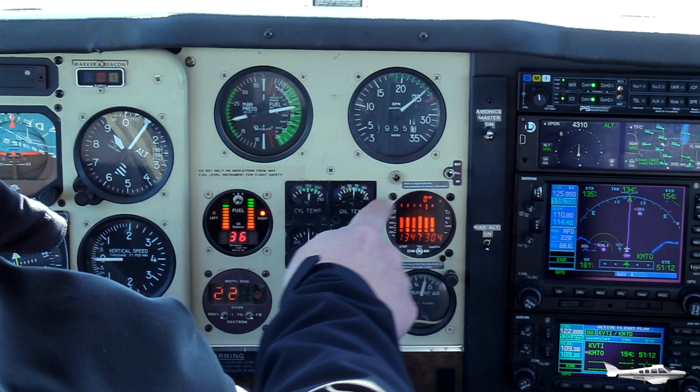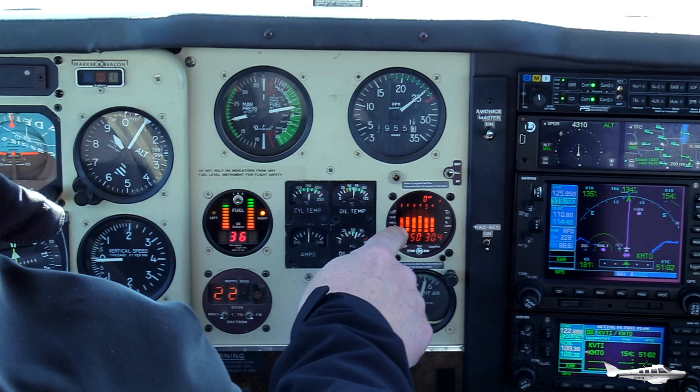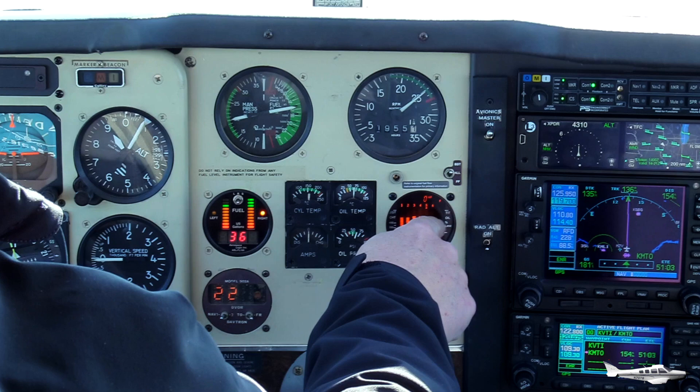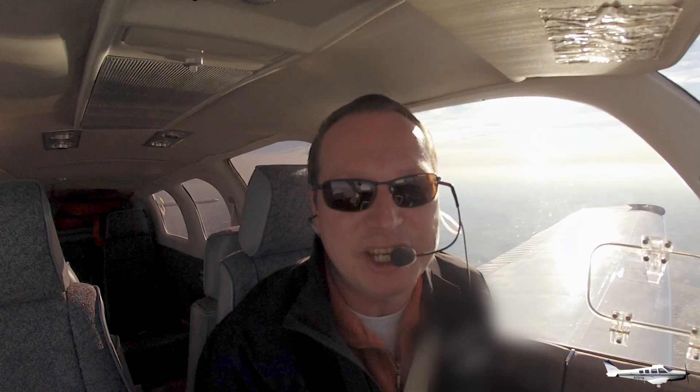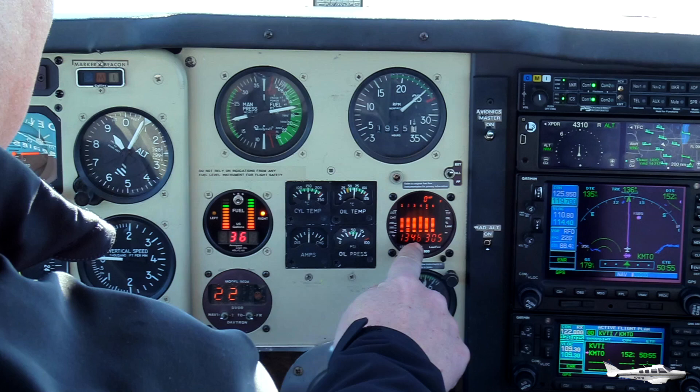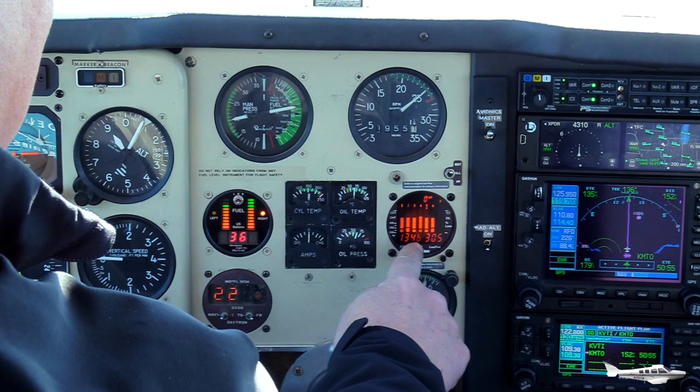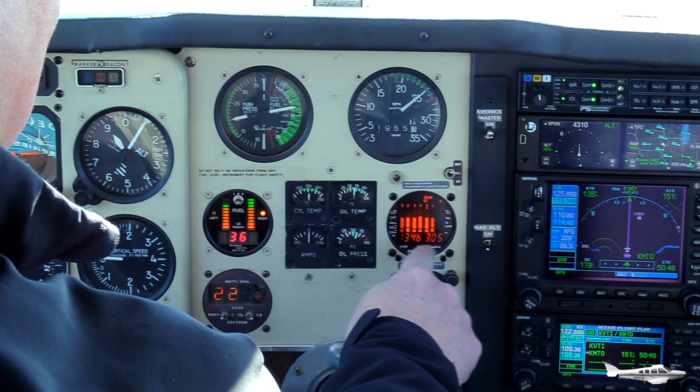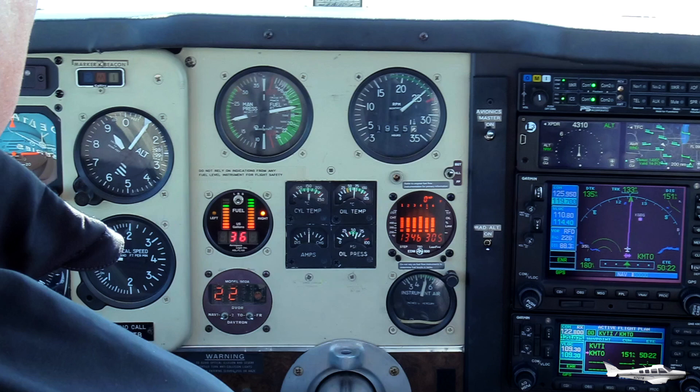And second, this one here, which is the digital engine monitor. It has bar graphs, where each bar represents one of the six cylinders of my engine. And each bar shows two different values. The top of the bar shows the exhaust gas temperature, or EGT, how hot is the gas that's pushed out of the cylinder after the combustion event. The bottom portion of each bar represents the cylinder head temperature, or CHT, showing us how hot the metal of the cylinder is. And then we have these two numbers here at the bottom, 1349 and 305. Those are precise digital readouts of EGT and CHT for one of the six cylinders.